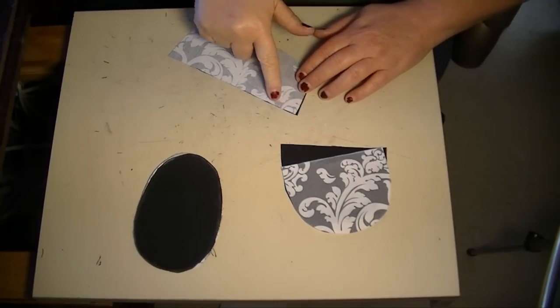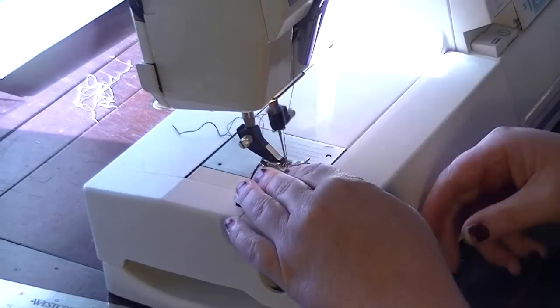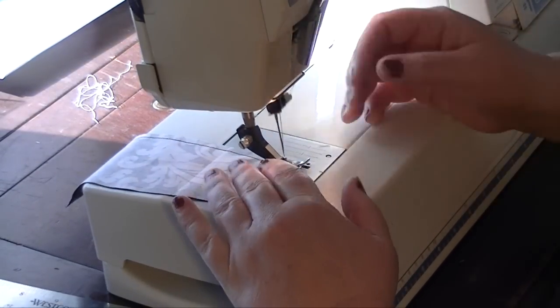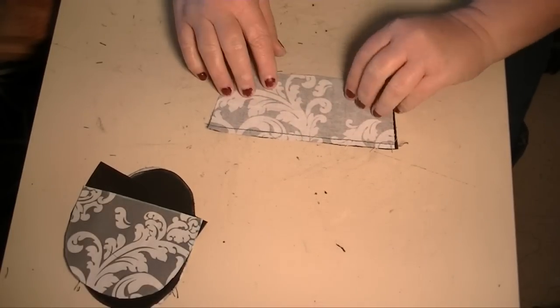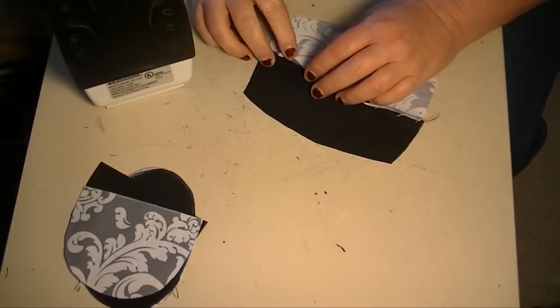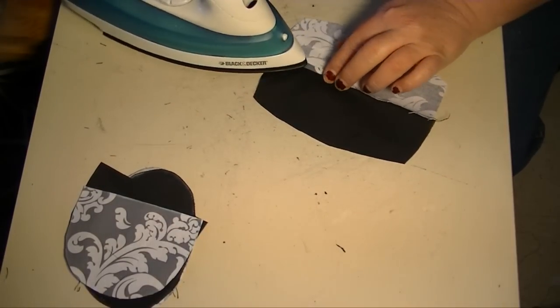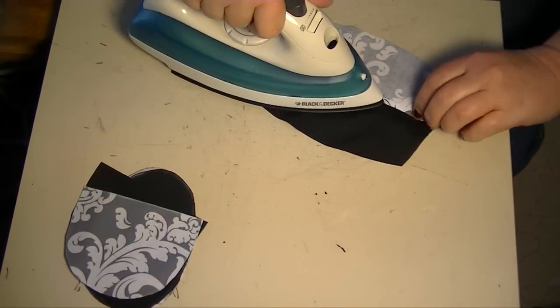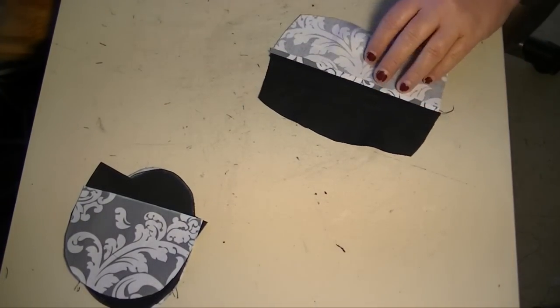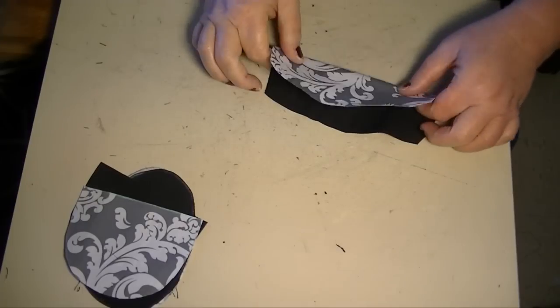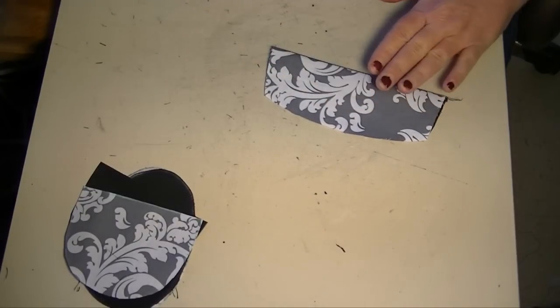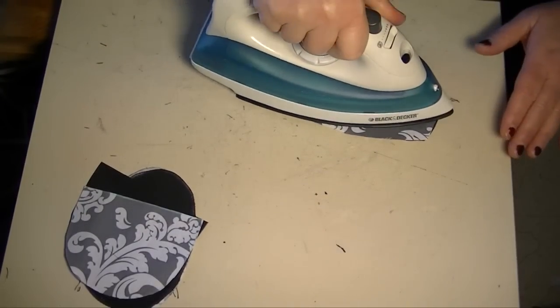The next thing I'm going to do is put right sides together on this heel, and I'm going to stitch along here about a quarter of an inch. Now that I've sewn this together along here, I want to turn it. I find it easier to iron this seam out before I turn this over. It just makes it easier to line everything up. And then I want to press it again.